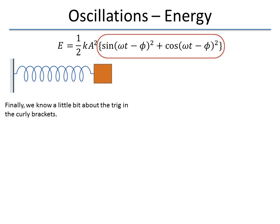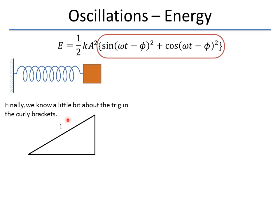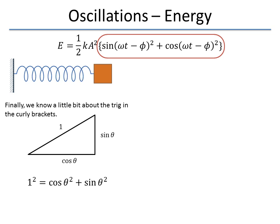In case we're a little rusty on it, remember that a triangle, if it has hypotenuse equal to one, that the components, the x and the y components, is sine of the angle and cosine of the angle. Well, it's just an argument, theta. If I replace theta with omega t minus phi, something we can do, we can see that from trig, the cosine squared plus the sine squared is equal to one squared. This is just Pythagorean theorem.